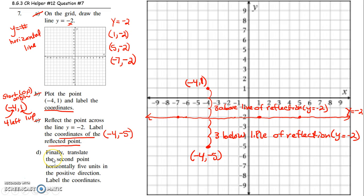And then finally, translate that second point, that negative 4, negative 5. They want you to translate the point negative 4, negative 5 horizontally 5 units in the positive direction. So that means they want you to take that and move it 5 units to the right, slide it 5 units to the right, horizontally, in the positive direction. 1, 2, 3, 4, 5. If I take that point and I move it, slide it 5 to the right, I end up at...